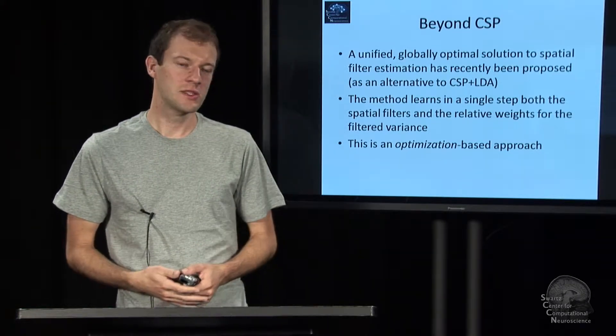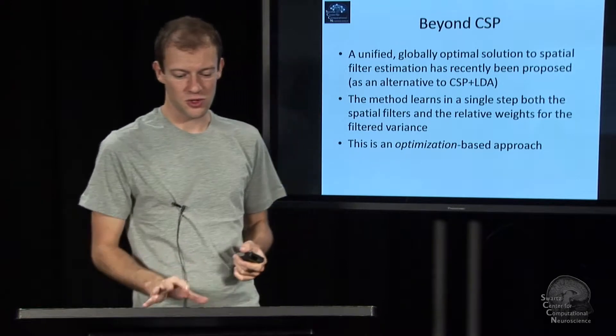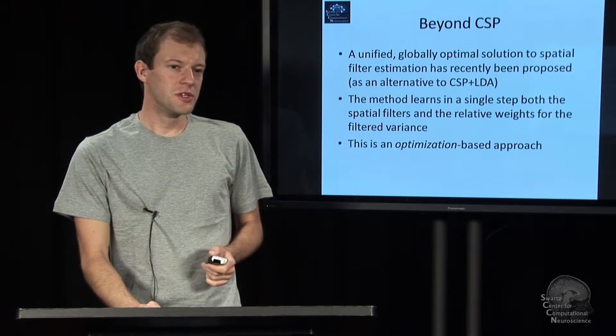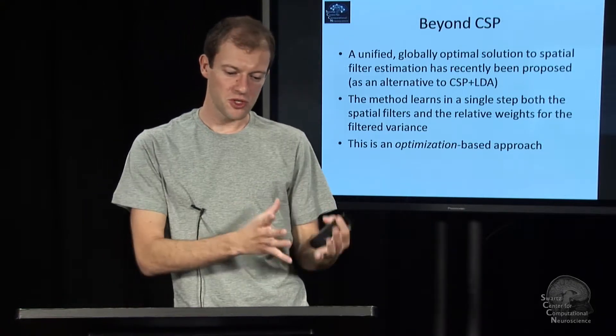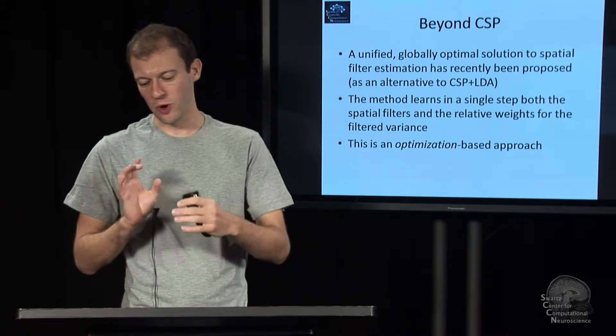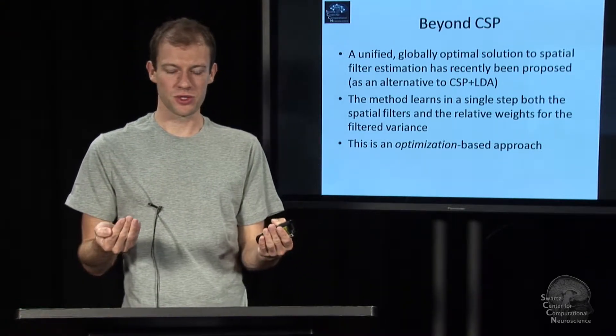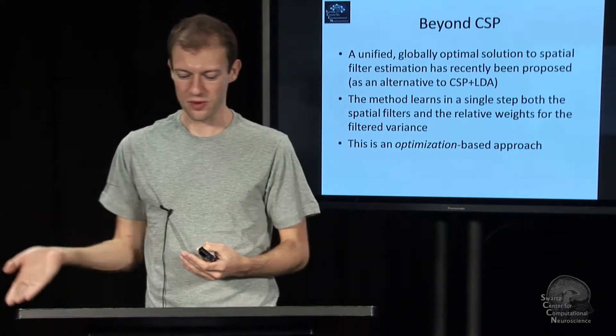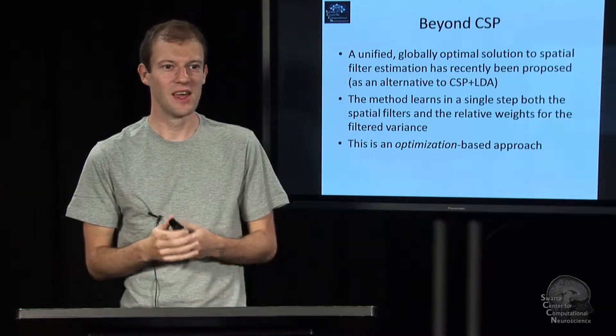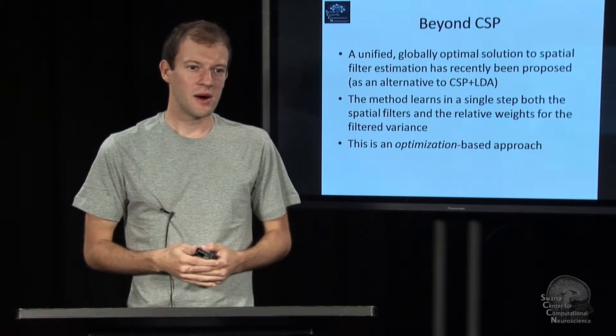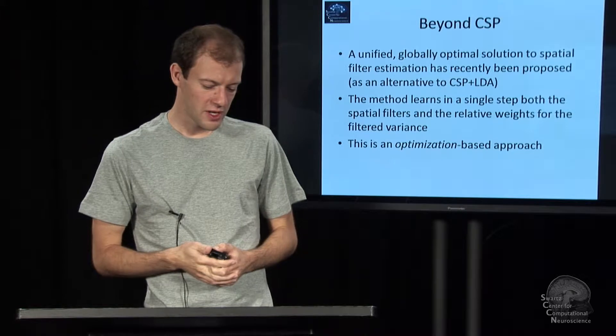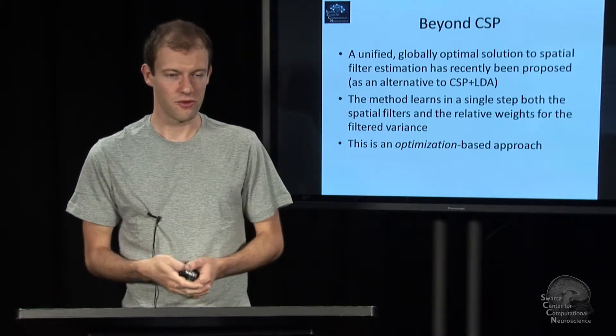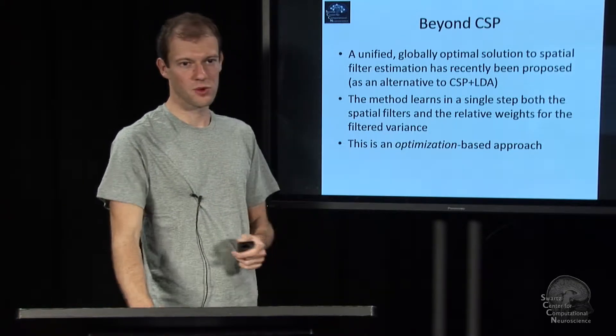This is desirable as opposed to the two-stage procedure where it's very hard to reason about under which conditions it's actually optimal. This method learns in one step both the spatial filters and whatever relative weightings of these filters that go into the final output that the BCI calculates, such as your workload level. The method is pretty much applicable to any sort of stationary oscillatory process. It is an optimization based approach.